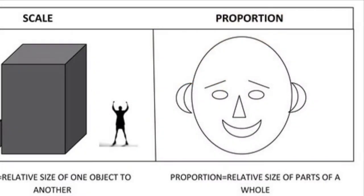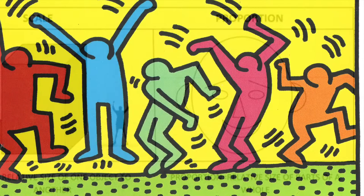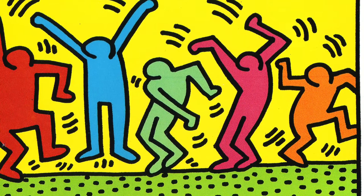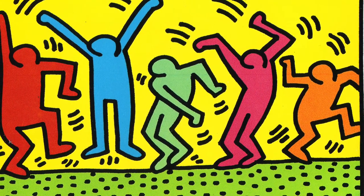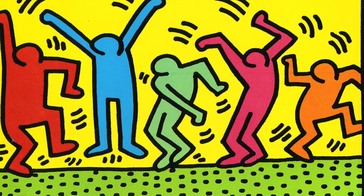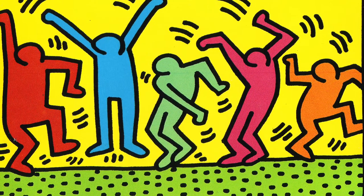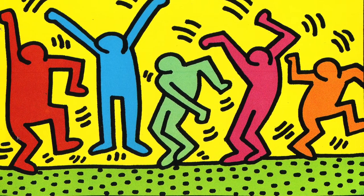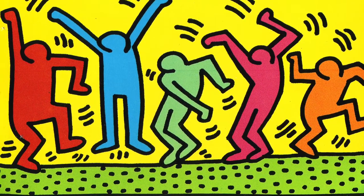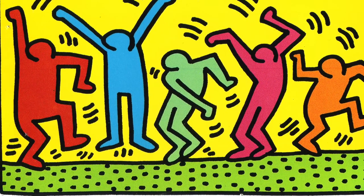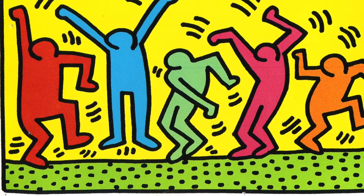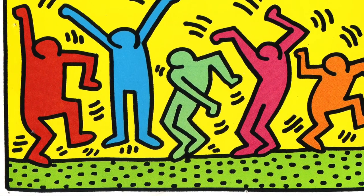Proportion is how things relate to each other as a whole. So for example, when you're looking at Keith Haring's figures, you want to pay attention when you're drawing: how do the arms look compared to the body? How does the body compare to the legs? Does it look like it fits that body? You also have to think about how each figure relates to each other and how your space is being used. All right, let's get started.